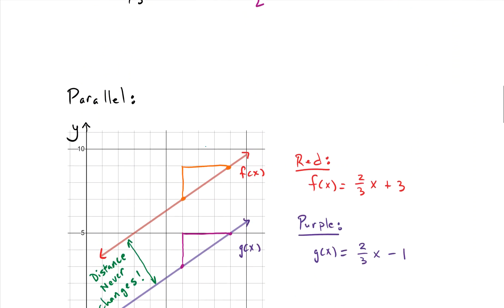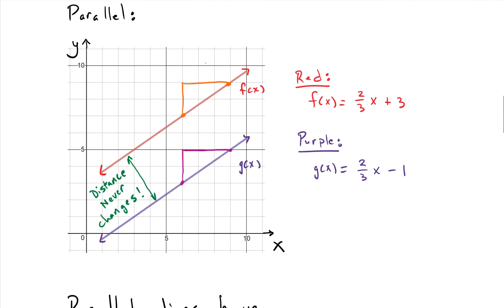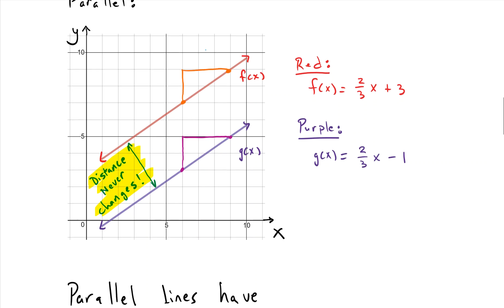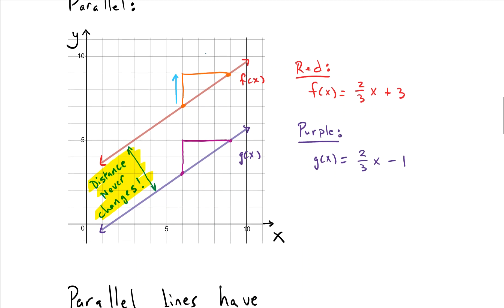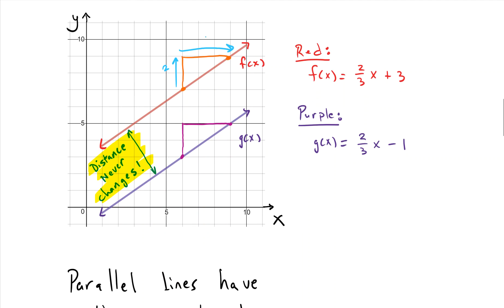If we look at parallel lines, parallel lines never touch, meaning the distance between the two lines always stays the same. If we look at the red line first and we look at the rise over run, we get two in the positive y and we get three in the positive x. So the slope rise over run is two-thirds.